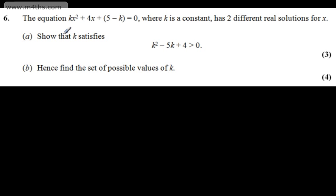In part A for three marks, we need to show that k satisfies k squared minus 5k plus 4 is greater than 0. If this has two different real solutions for x, we can say the discriminant b squared minus 4ac will be greater than 0.